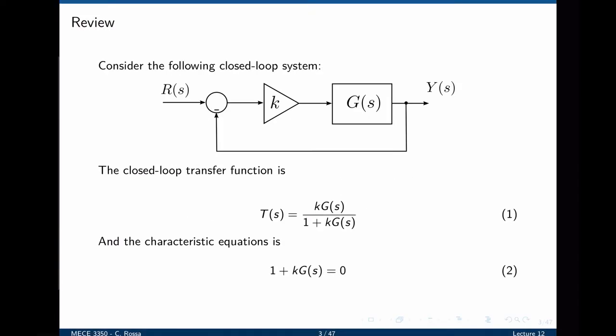Before we expand the concepts, let's do a quick review of lecture 11. Lecture 11 covered the basics of root locus. Consider the following closed loop system. We have a function g that is to be controlled in a unit feedback loop, and we have a gain k, which is our controller. The objective of the root locus is to find the location of poles as one parameter in the control scheme varies from 0 to infinity.